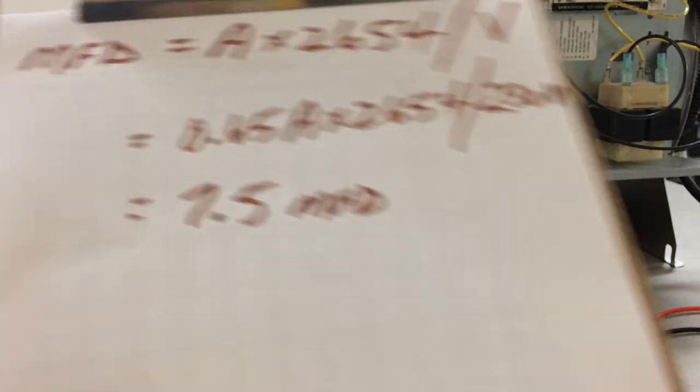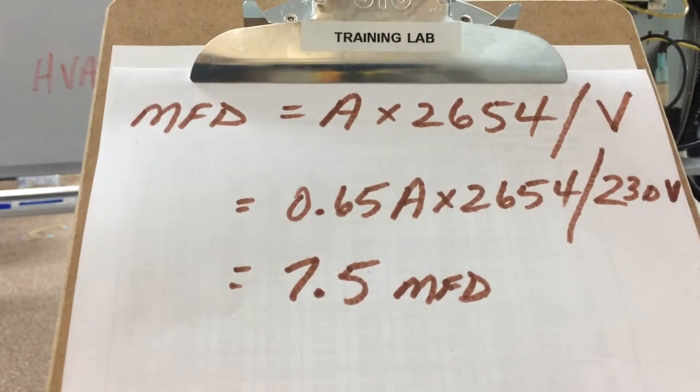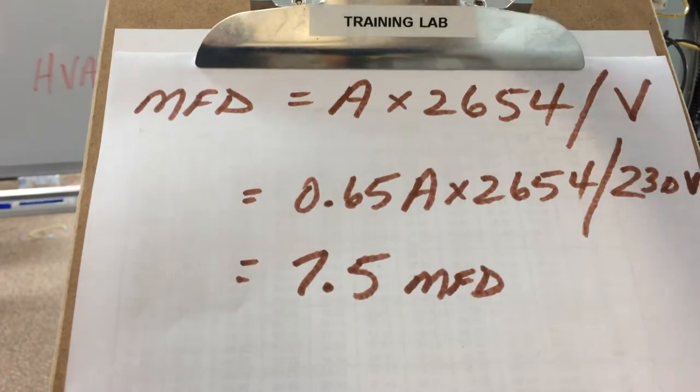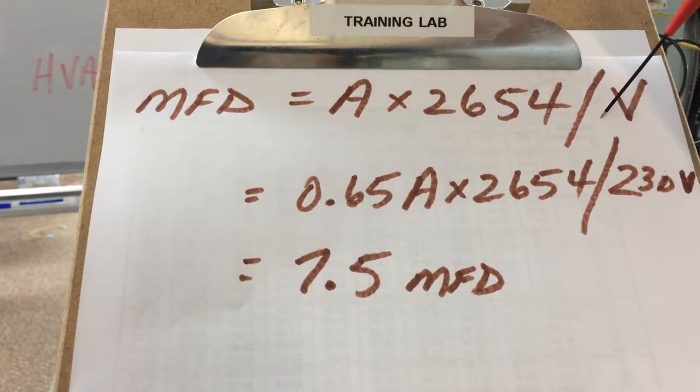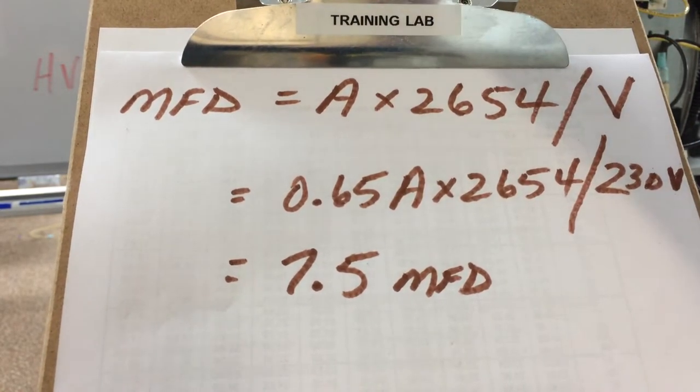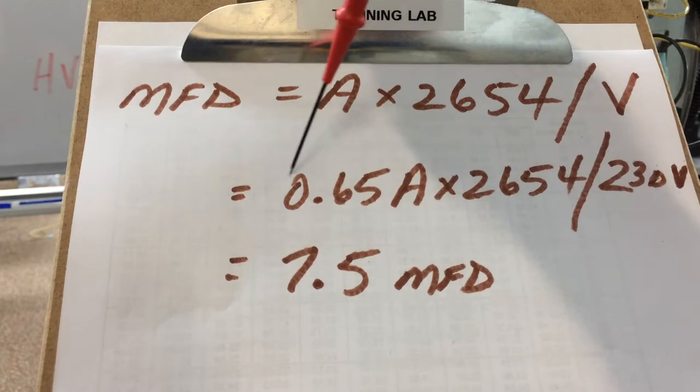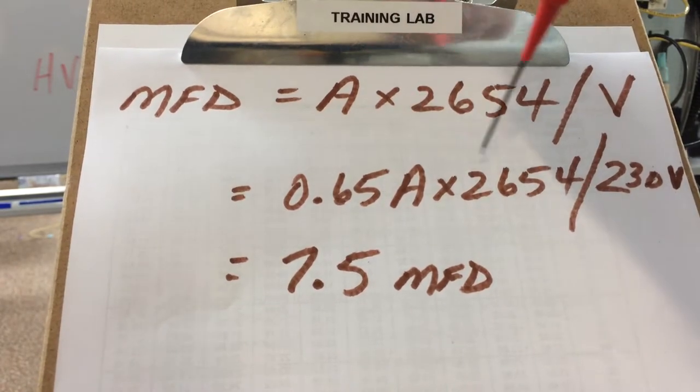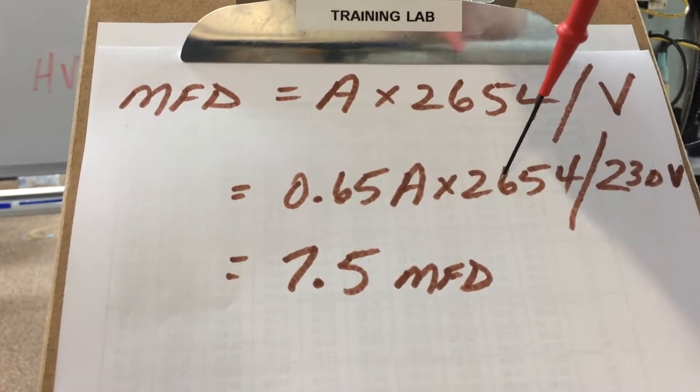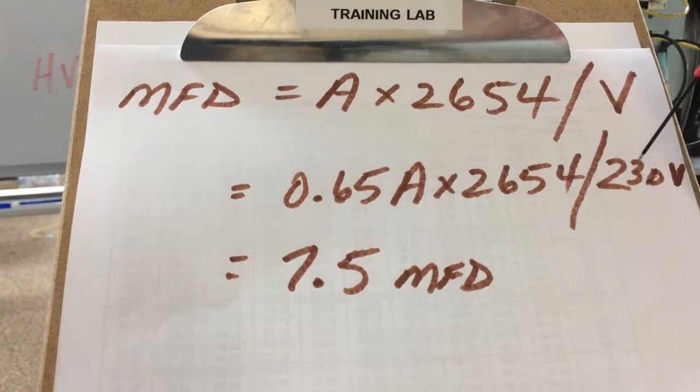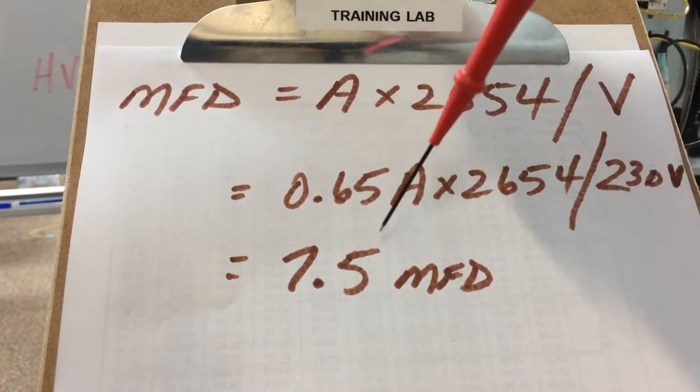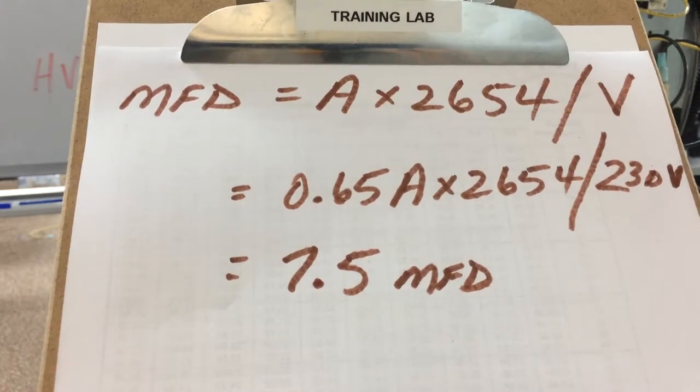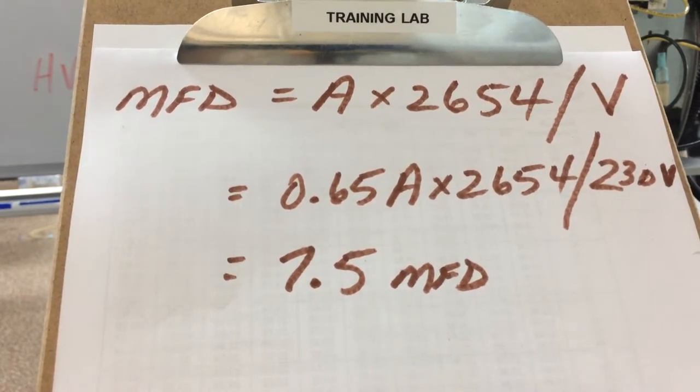And of course, taking a look at this, again, microfarads equals amps times 2654 divided by volts. So I'm just plugging my readings into this formula. I have 0.65 amps times my constant, 2654, divided by the 230 volts that I measured. And if I do the math on this, I come out with 7.5 microfarad.